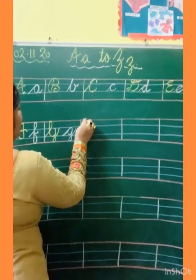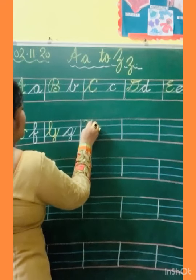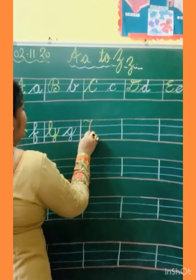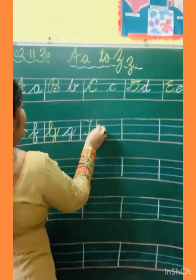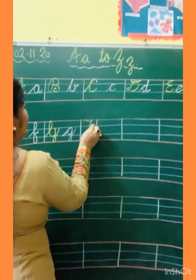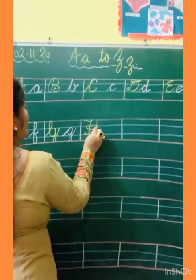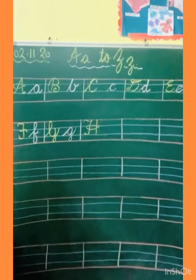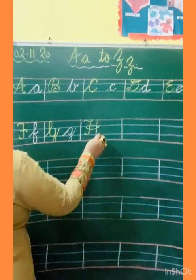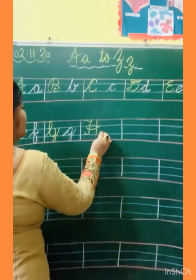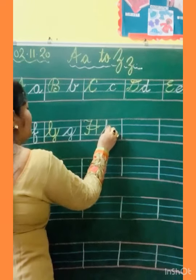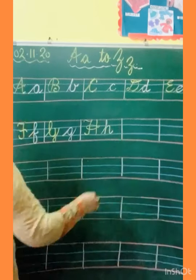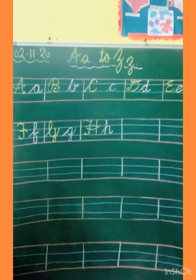Now capital H. Turn, curve, slanting line, and again make one standing line. In the center line make an oval, go up, and kick. This is capital H. Small H: slanting line, standing line, go up, make curve, and kick. This is small H.